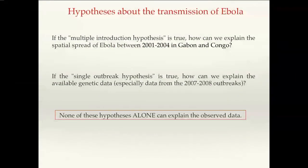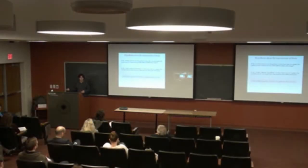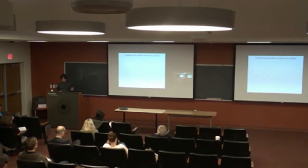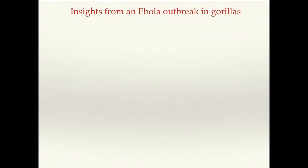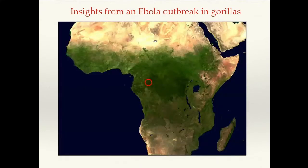Maybe we should actually look at what's happening outside of human outbreaks. I'm going to bring insights from the observation and analysis of data collected during an Ebola outbreak in gorillas that took place close to the border of Gabon in Odzala National Park in the Republic of the Congo in 2004. A couple of months before, in November 2003, there was a human outbreak in the village of Mbomo in the Republic of the Congo, where 29 people died out of 32 cases in just one month.